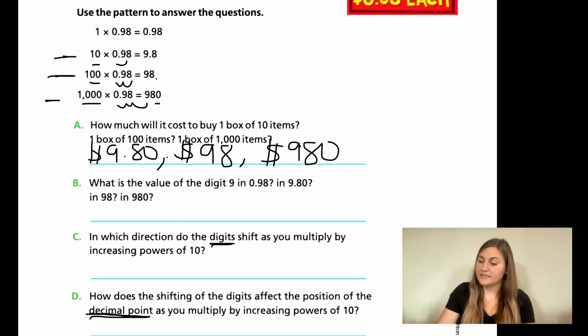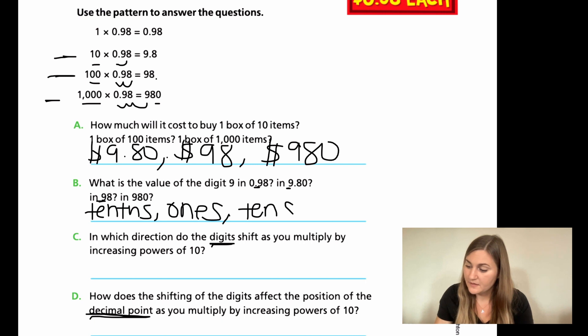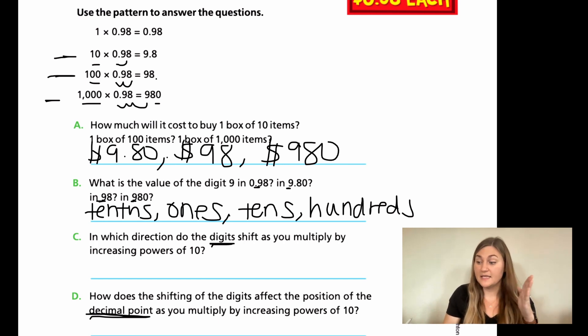So now we're writing down the place value. The nine right here, that's in the tenths place value. The nine in this one is in the ones. The nine in 98, 90, that's in the tens place value. And then the nine in 900, that's in the hundreds. And notice what's going on with the place value. It's getting bigger, right? It's going from tenths to ones to tens to hundreds. It's just getting bigger by one place value.